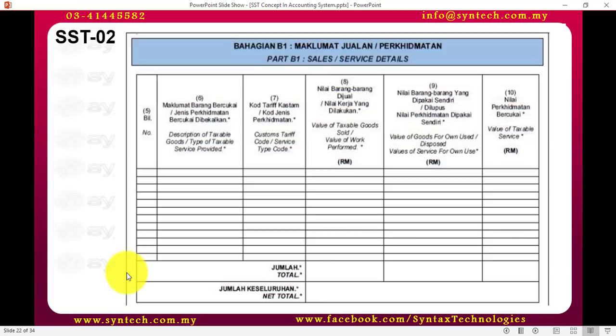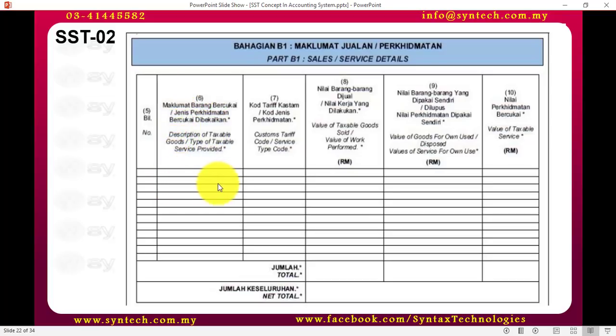From the form, you can see that for the B1 section, there are fields numbered 5 through 10. You can see there are different types of services or goods that are taxable and that you are providing. You need to put in the tariff code or service type code, meaning for all taxable items or taxable services, you must have the tariff code or the service type code. Later, I'll teach you how to set it inside your accounting system.